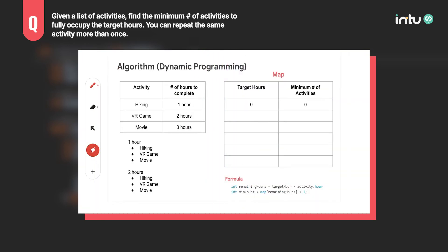Another approach is to use dynamic programming. We can start by finding the minimum number of activities required to occupy one hour, two hours, three hours, and up to the target hours N. Every time we find the minimum number to occupy X hours, we store the result in a map so we can look it up in constant time. When we fill everything out, this map will tell you: for a given hours X, what's the minimum number of activities to perform.